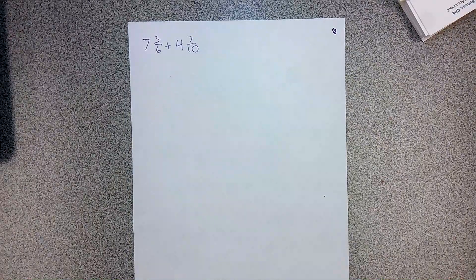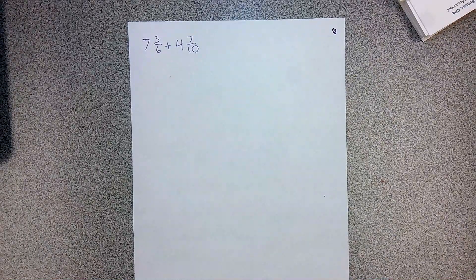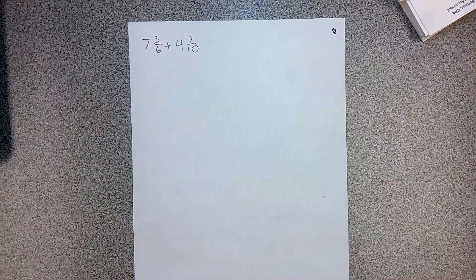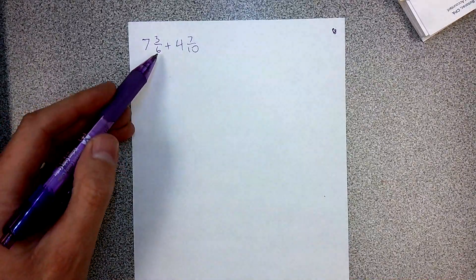Okay, the first thing you need to do, no matter what, is you absolutely have to get common denominators. When you're combining things together, when you're adding or subtracting, you need that label to match.